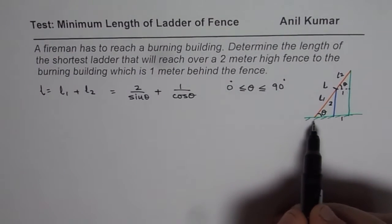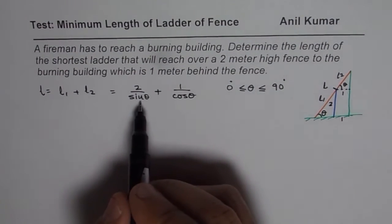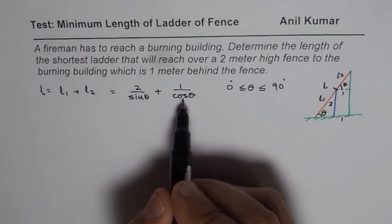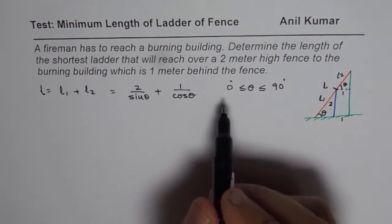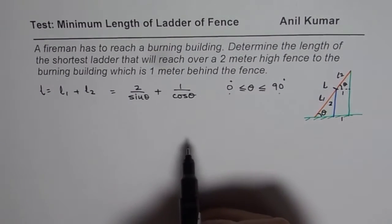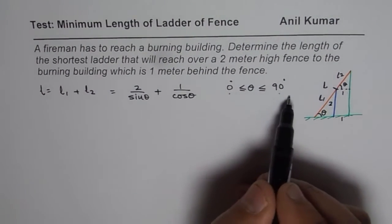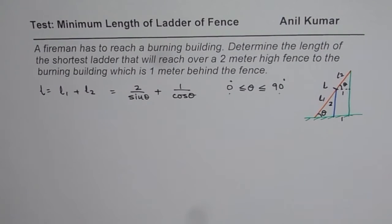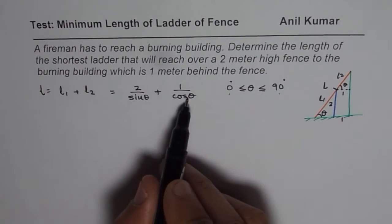Well, if theta is 0 degrees, if I put 0 here, it will become undefined. Even for 90 that other term is undefined. So basically what we get is that length for both these boundary conditions is very, very large. So anywhere in between it is going to be the minimum length. So that is kind of important to understand.